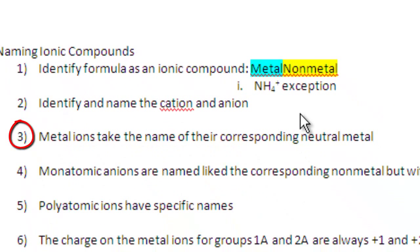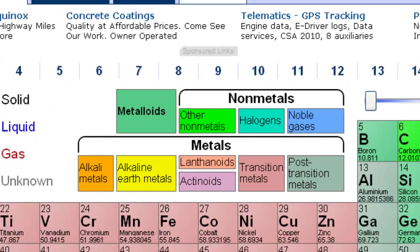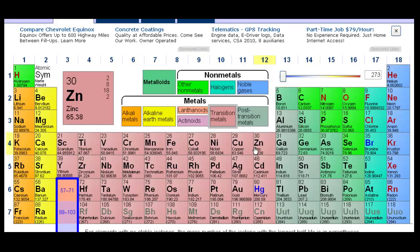Metal ions take the name of the corresponding neutral metal. For example, all of the metals in the periodic table retain their name. So a zinc ion is simply called zinc, a chromium ion is simply called chromium. Sodium, sodium. Calcium, calcium, et cetera.